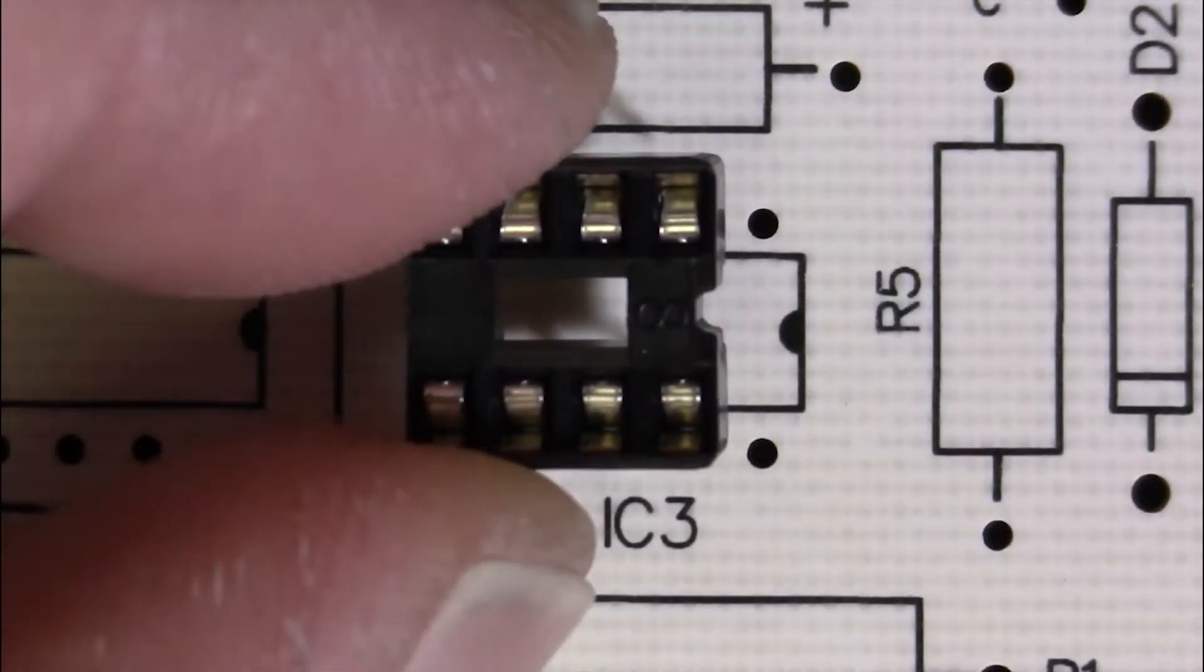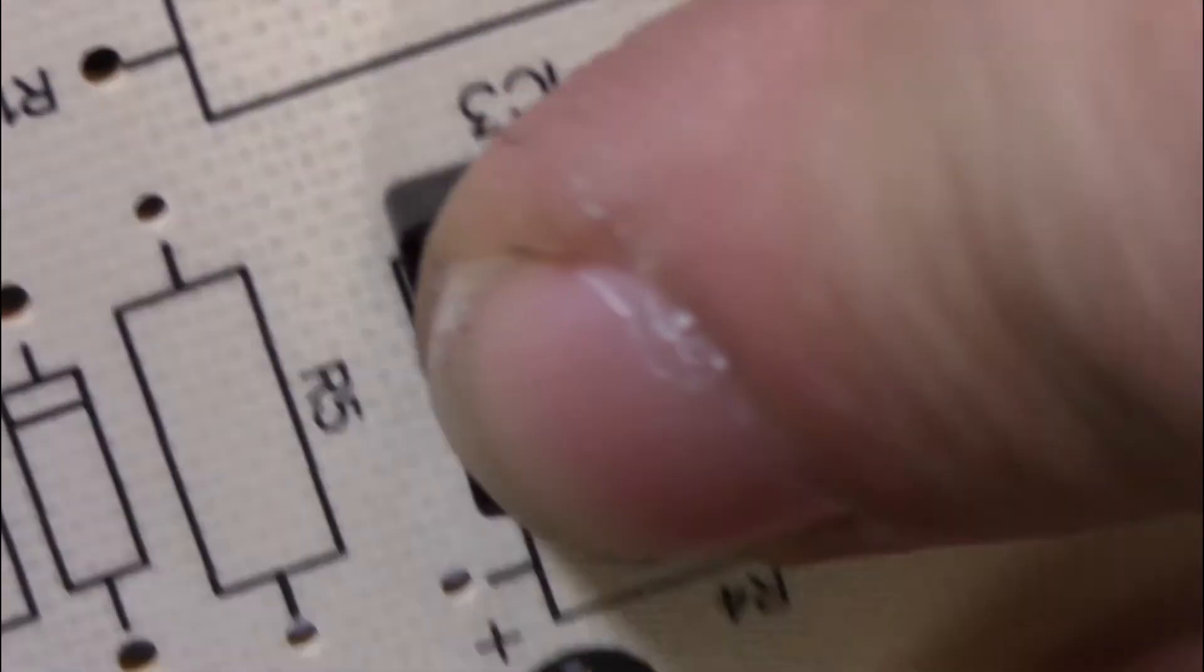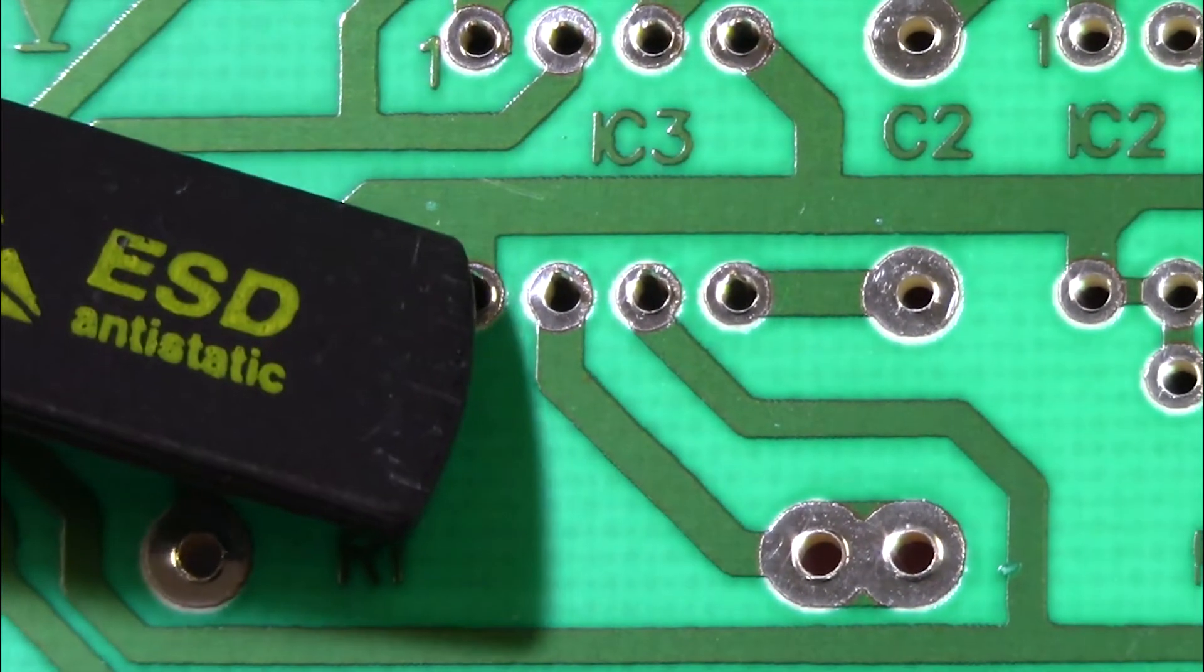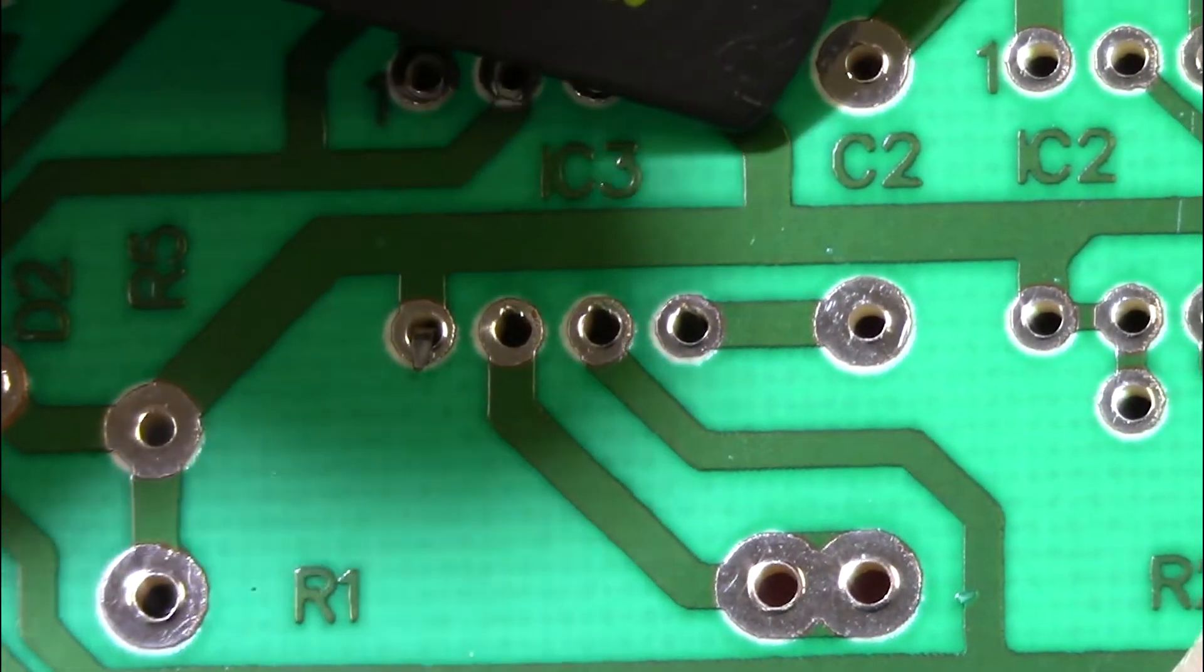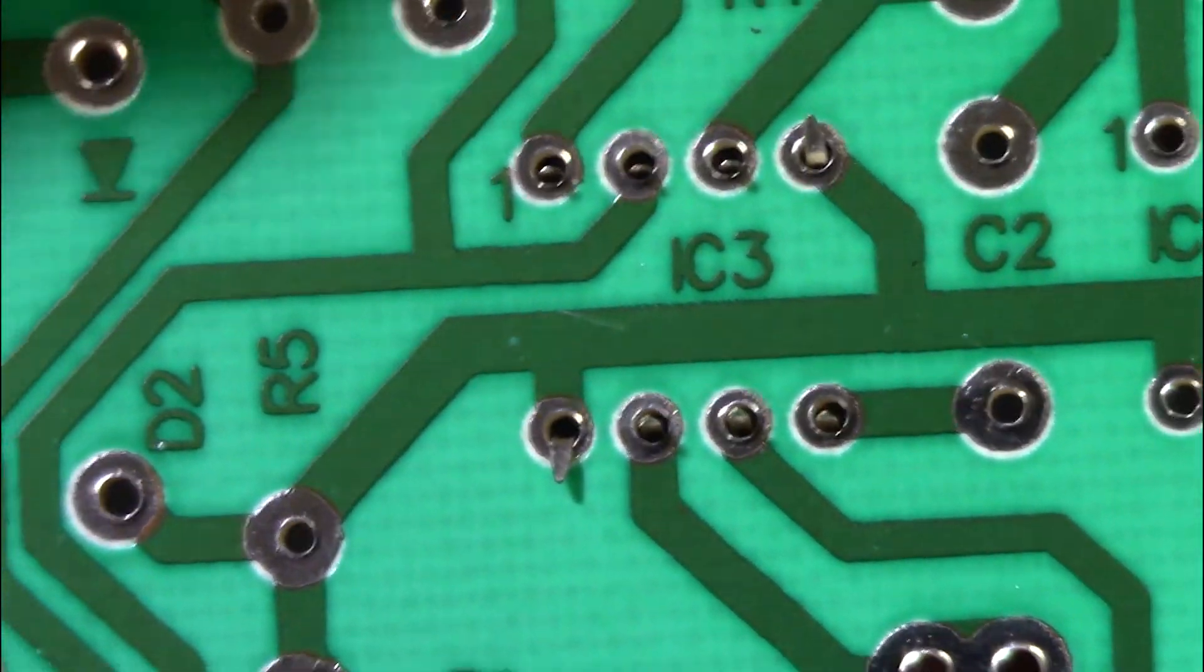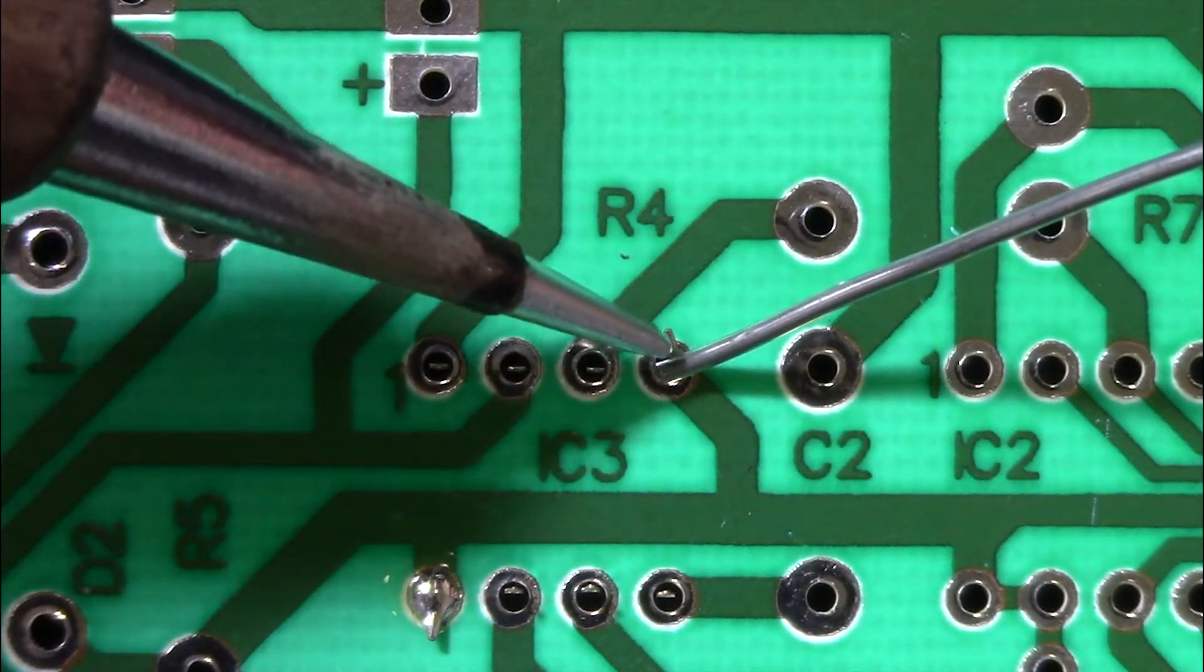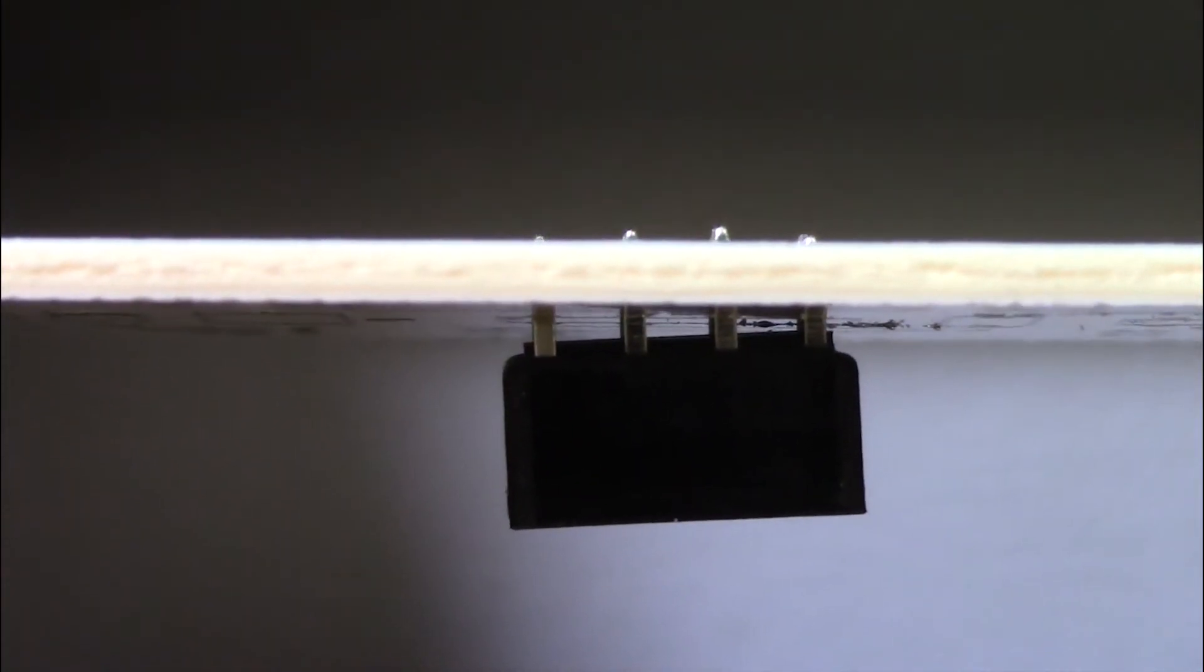When you install the IC sockets, make sure you have the correct orientation and hold the socket with your finger and turn the PCB over. You will need to bend two diagonal pins down so the socket does not fall out. Because of the smaller pin and pad size, you will use the 1.2 millimeter screwdriver type iron tip to solder the IC sockets.